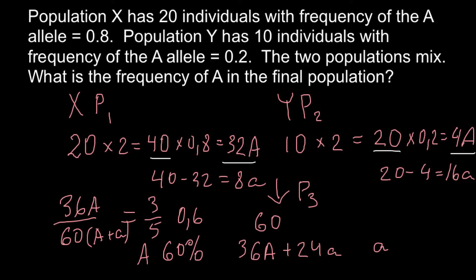So small a alleles would be 40%. So here is our answer.